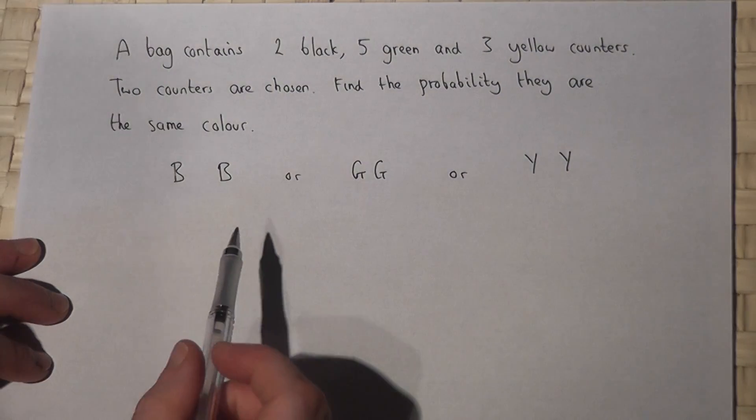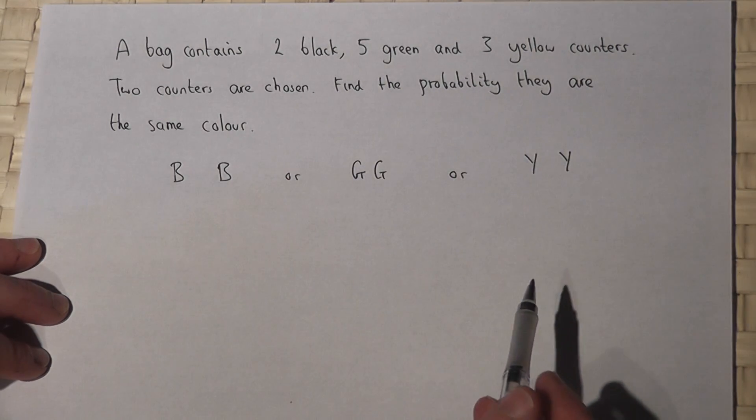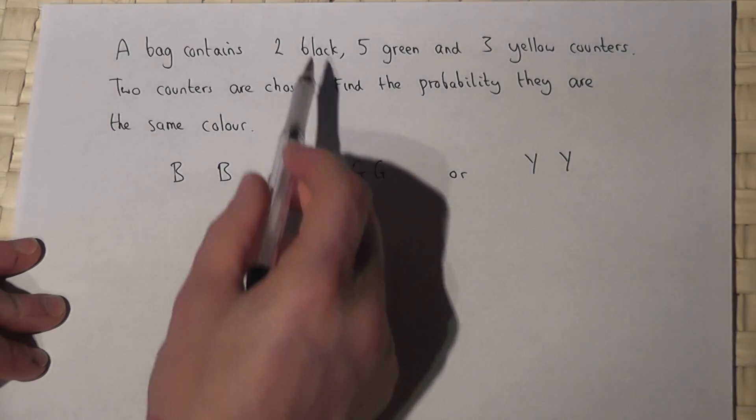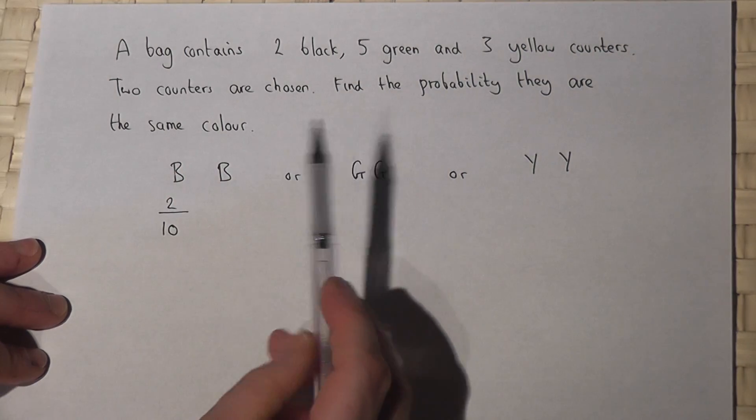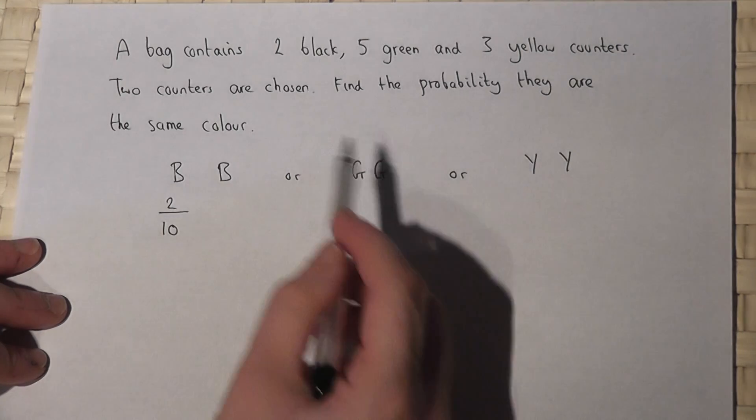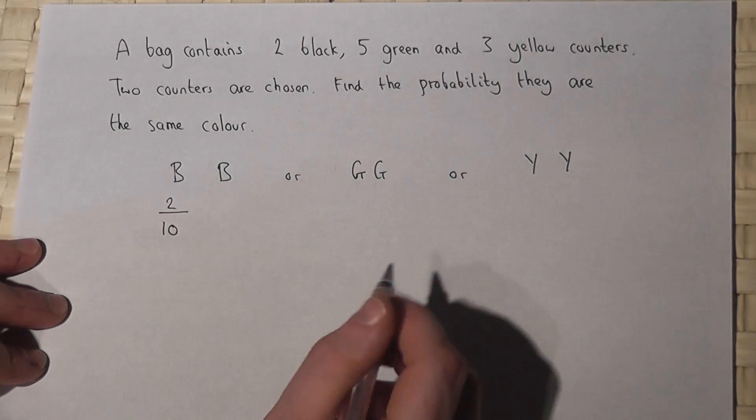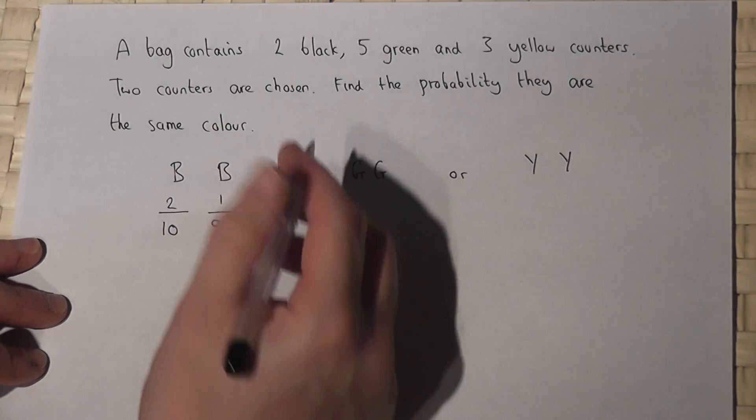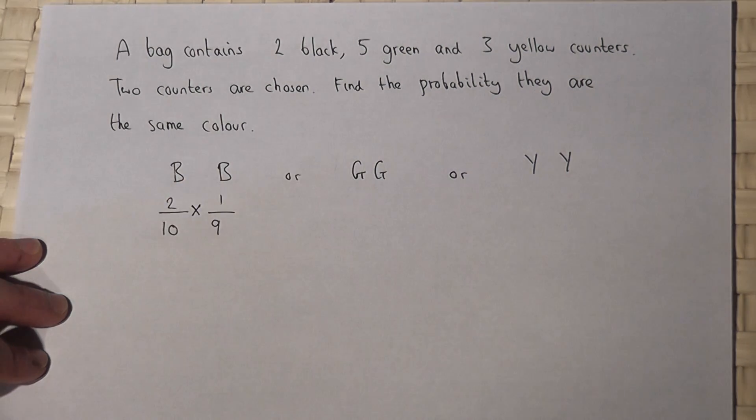Now the black then black. In the bag there are ten counters to start off with, so when you first go into the bag the chance of a black counter is two out of ten. However once you removed one of the black counters the chance the next counter's black will be only one because there's one less black in the bag out of nine because there's one less counter in the bag. So black and black is two tenths times by one ninth.